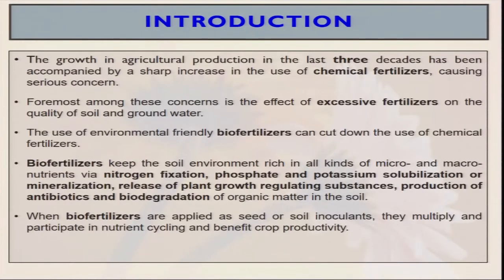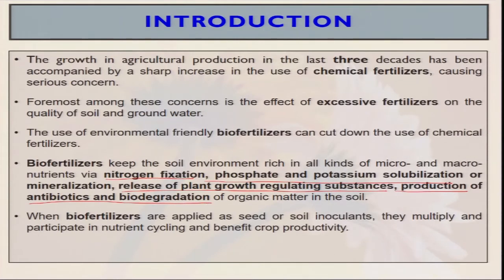The growth in agricultural production in the last three decades has been accompanied by a sharp increase in the use of chemical fertilizers. When we use excessive fertilizers, it degrades the quality of the soil as well as the quality of water. In this scenario, biofertilizers keep the soil environment rich in all kinds of micro and macronutrients. They perform different types of nitrogen fixation, phosphorus and potassium solubilization, release of plant growth-related substances, and also produce some types of antibiotics and help with biodegradation of organic matter in the soil. In our natural system there are thousands of different types of microbes — some may be harmful and some may be beneficial. For our organic farming, we have to identify which microorganisms play a very prominent role in nutrient supplementation, nutrient mobilization, and production of secondary metabolites.